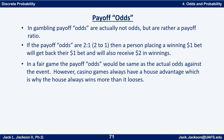There's something else sometimes called odds, but it's not really odds at all — gambling payoff odds, which are actually a payoff ratio. If the payoff odds are 2 to 1, then a person placing a $1 bet will get their $1 bet back and also receive $2 in winnings — they win $2 for every $1 bet. If the game were fair, the payoff odds would be the same as the actual odds against the event. However, casino games always have a house advantage, which is why the house always wins more money than it loses in the long run — so payoff odds are not the same as actual odds.